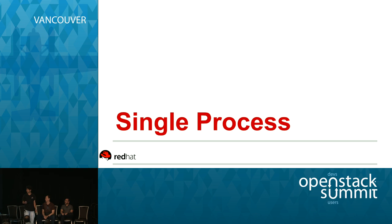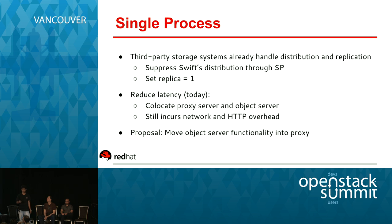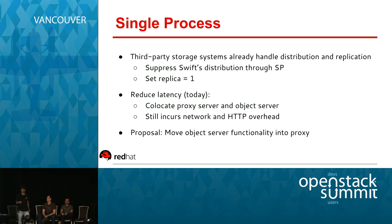Okay, we'll talk about single process work that's been going on for some time. The single process is a simple optimization. When you have Swift backed by a third-party clustered file system such as GPFS, GlusterFS, or CephFS, a lot of the heavy lifting is done by the clustered file system. Distribution and replication are usually handled by the clustered file system, not Swift.